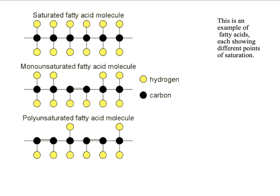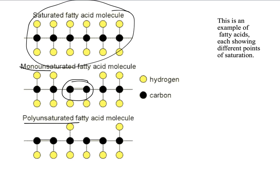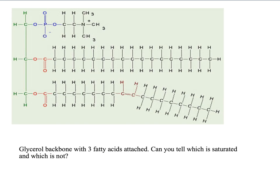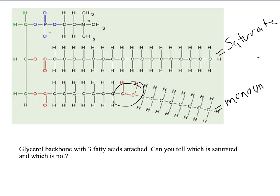Nothing for you to write down on this slide. You can see that here we have our saturated fat with all single bonds. This is a monounsaturated because it only has one double bond. This is polyunsaturated because it has two double bonds. This slide is just giving you a chemical picture of what a monounsaturated fatty acid tail would look like, showing the difference between a saturated and a monounsaturated fatty acid.